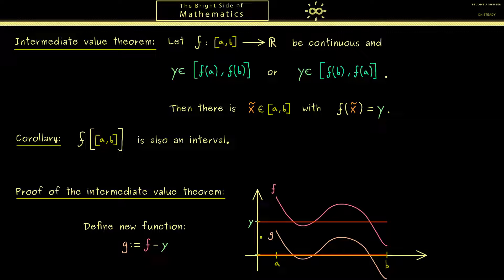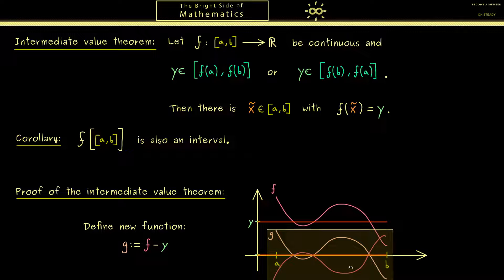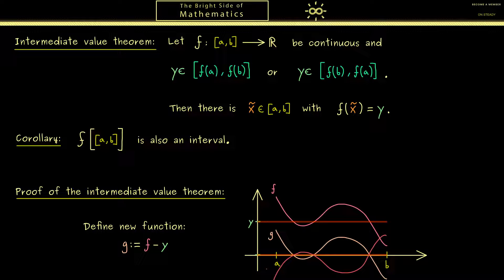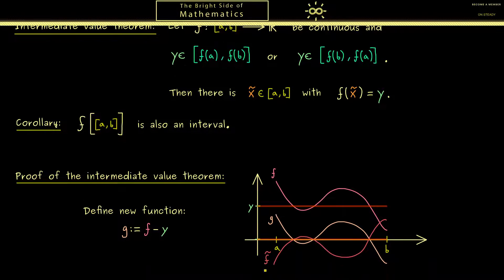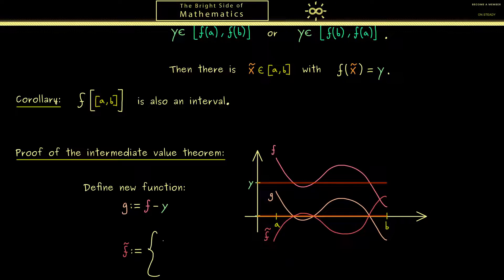Now the next normalization we could do is that it would be nice if the value at the right is larger than the value on the left. So what we could do is just mirror the whole graph and then we have a new function which has exactly this property. And this function we now can call f tilde. However please note here we only mirror the graph if it's needed. So in the formula this would mean f tilde is defined as minus g, however only in the case that g(a) is greater than 0. If g(a) is less or equal than 0 we don't have to do anything, we can just set f tilde to g.